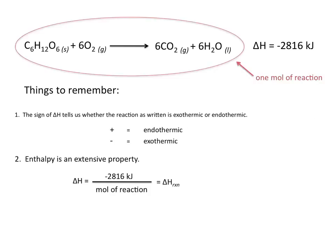The other thing to remember is that enthalpy is an extensive property, and that means it's independent of the sample size. So delta H, as written for this equation, equals negative 2,816 kJ per mole of reaction. And this is always the case when delta H is written alongside a reaction.